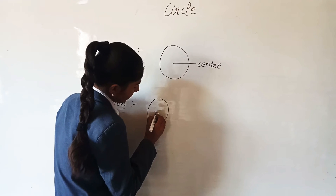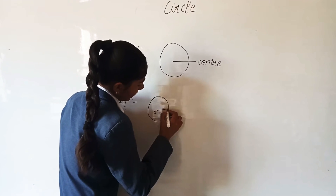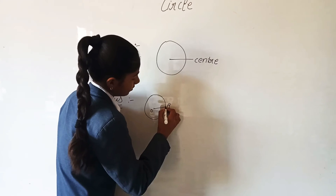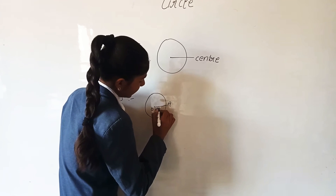Let the center point be O and this point A. The line from O to A is known as the radius.